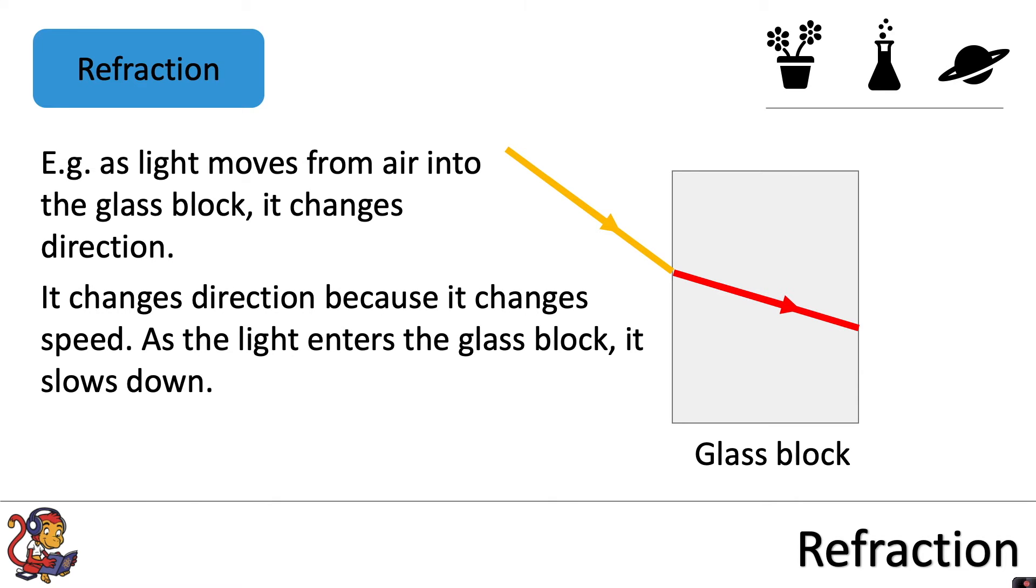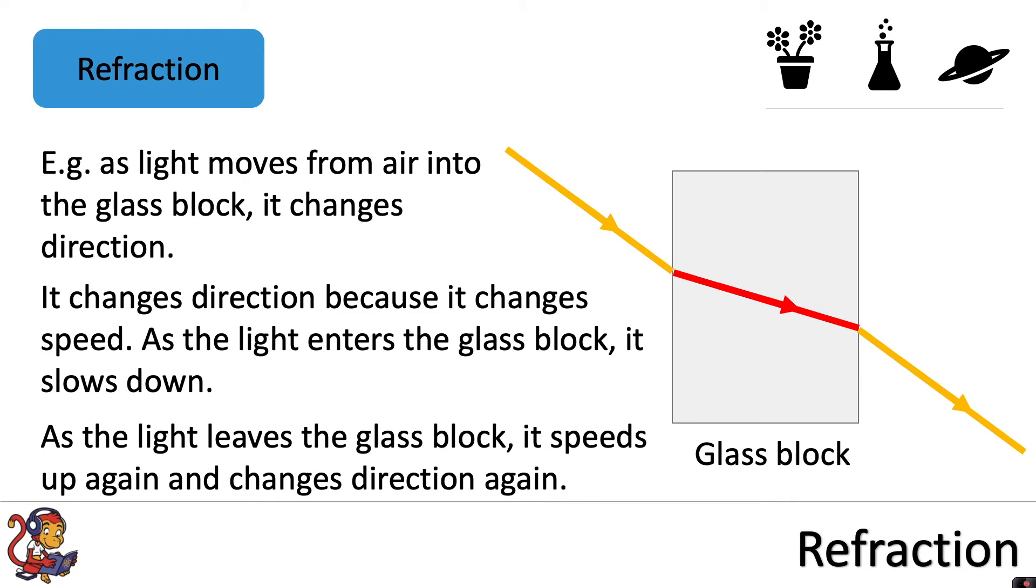It changes direction because it changes speed. As the light enters the glass block, it slows down. As the light leaves the glass block, it speeds up again and changes direction again, because once again, it's travelling in air.